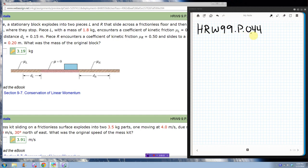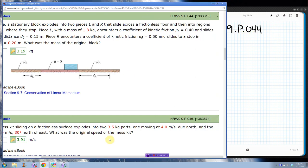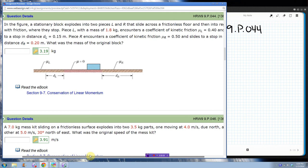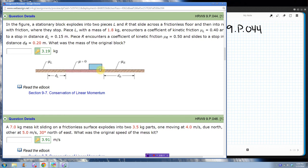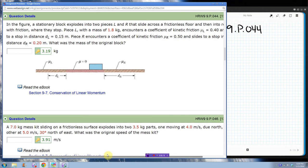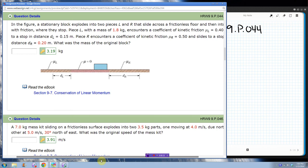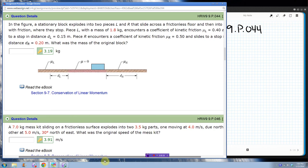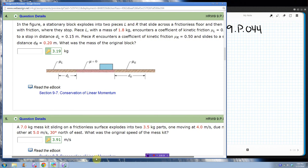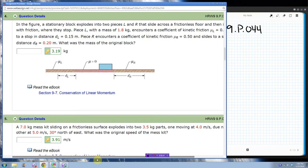This is HRW99P044. We have a stationary block that explodes into two pieces, and we're calling them L and R for left and right, and they slide across a frictionless floor and then into regions with friction where they stop. Piece L with a mass of 1.8 kilograms encounters a coefficient of friction of 0.4 and slides to a stop at a distance dl equals 0.15 meters. Piece R, the right-hand piece, encounters a coefficient of friction of 0.5 and slides to a stop at another distance. What is the mass of the original block?